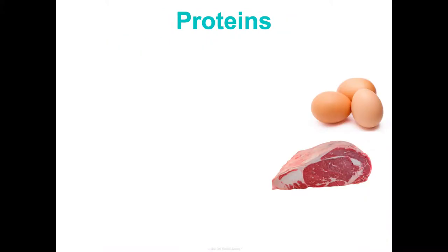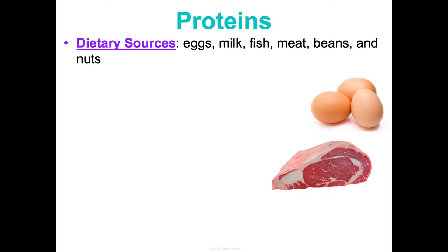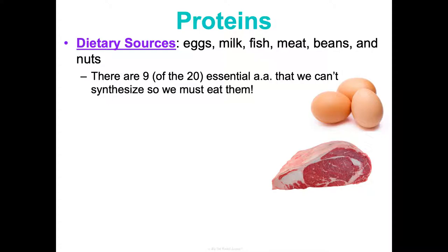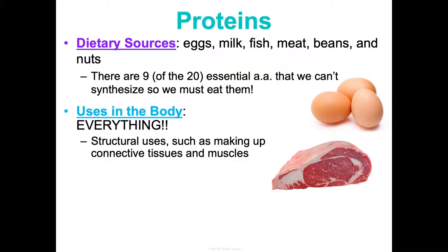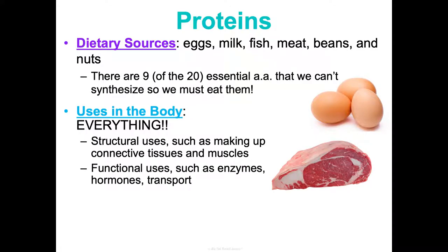Proteins come from eggs, milk, fish, meat, beans, and nuts in our diet. There are 20 amino acids; nine are considered essential because our bodies can't make them, so we have to eat them. We use proteins to do essentially everything in our body — structurally they make up so many things, and functionally they do so many things. For more detail, you can go back to the biology one macromolecules video or unit one.